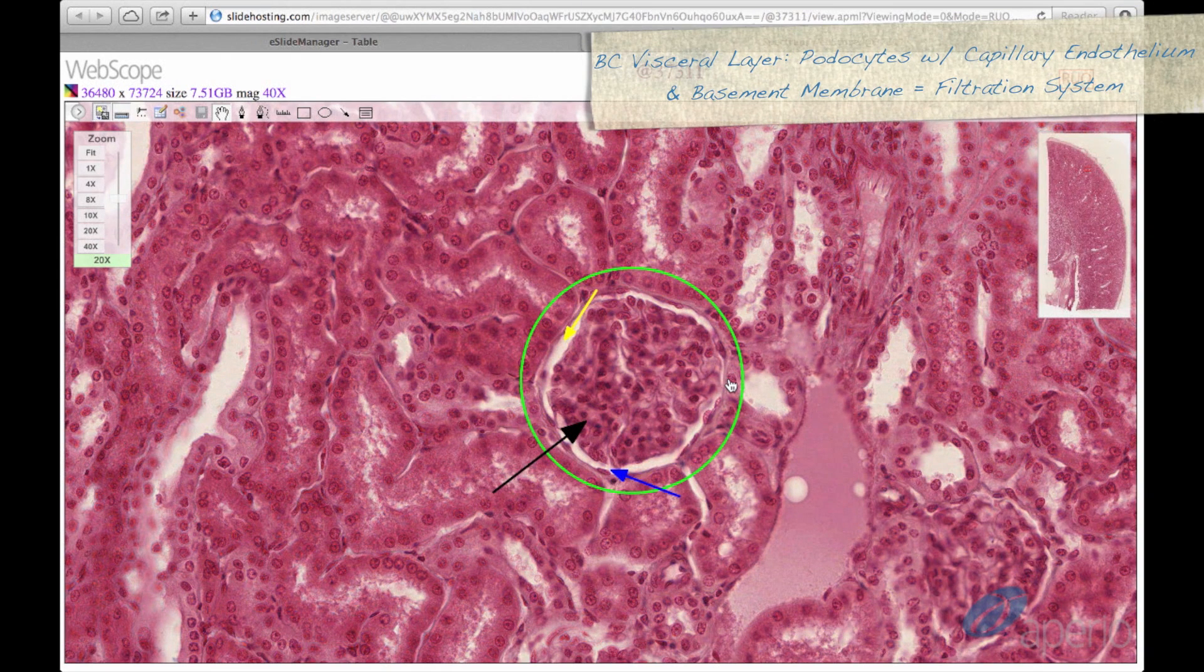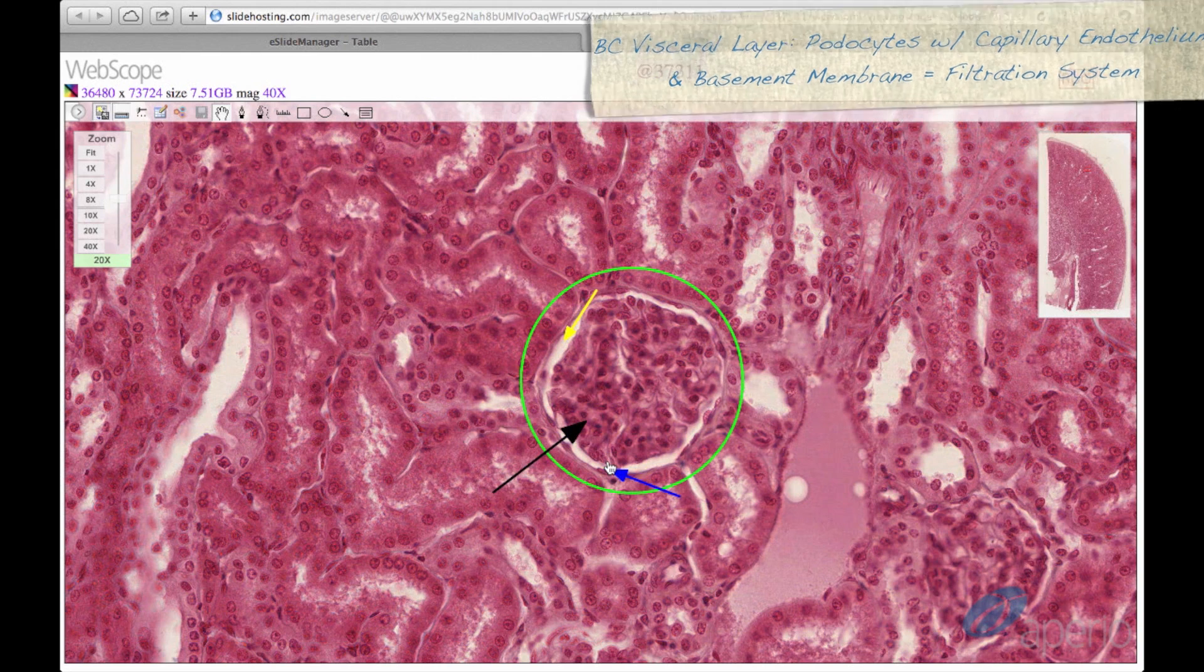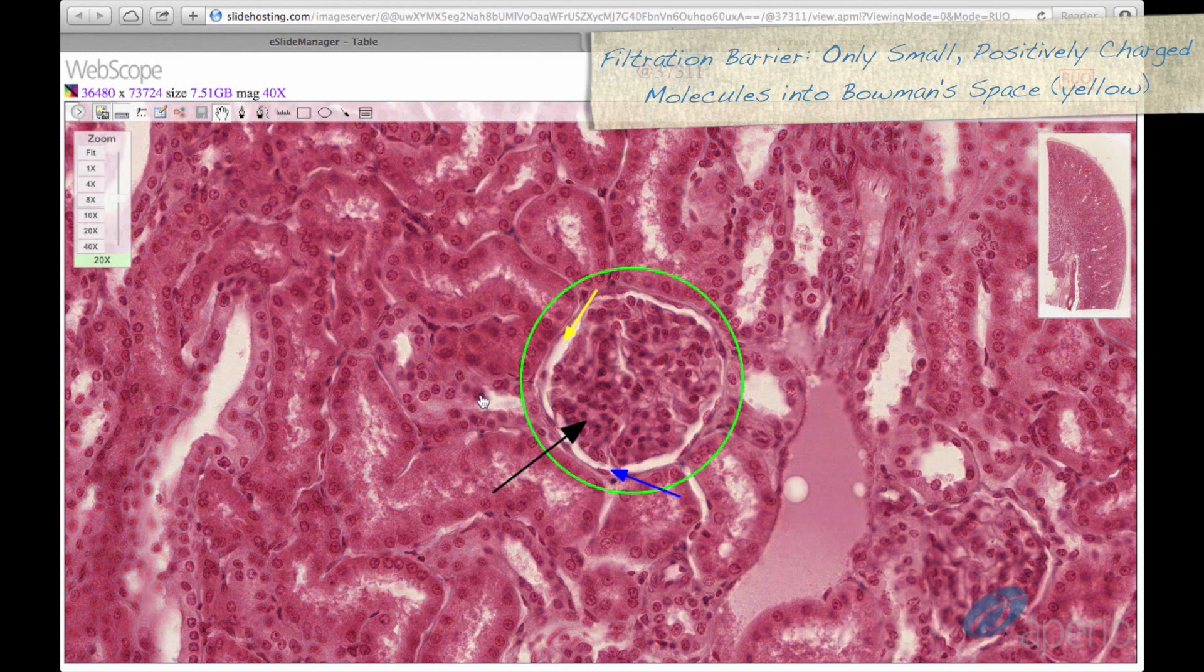The visceral layer of Bowman's capsule is composed of podocytes which, along with the endothelial cells of the glomerular capillaries and the glomerular basement membrane, form the filtration system of the renal corpuscle. This filtration barrier allows mainly small and positively charged molecules to pass through into Bowman's space, which is seen here at the yellow arrow.